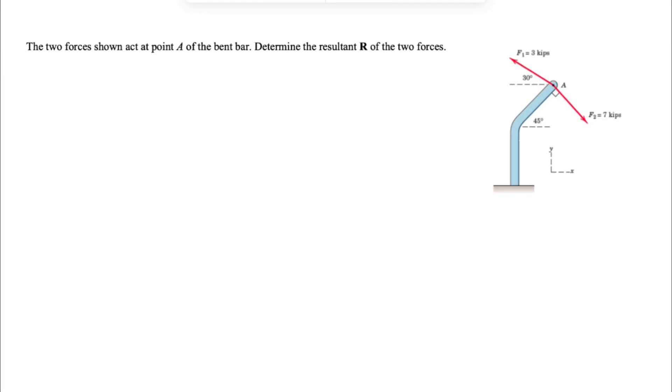All right guys, we're going to be solving a question from the second chapter of the Merriam textbook, Engineering Mechanics. We need to find the resultant of these two forces F1 and F2 acting at point A of the bent bar. We have the X and Y axis in the figure. To solve this, we're going to resolve each of these two forces into X and Y components, and based on that we can find the resultant.